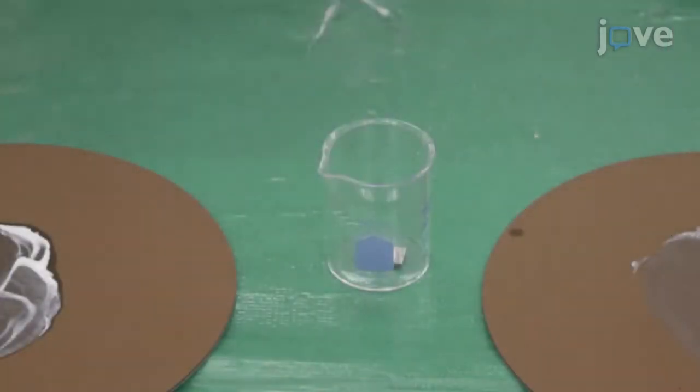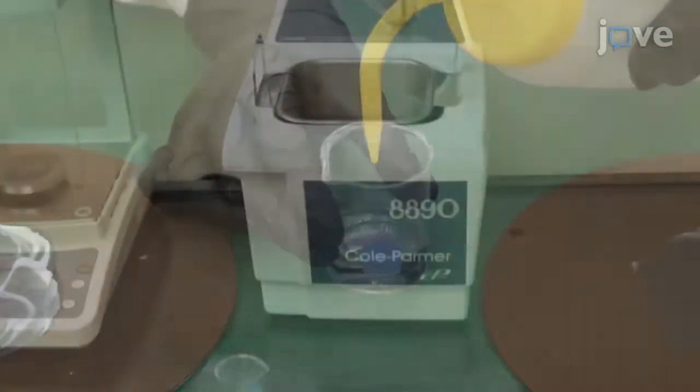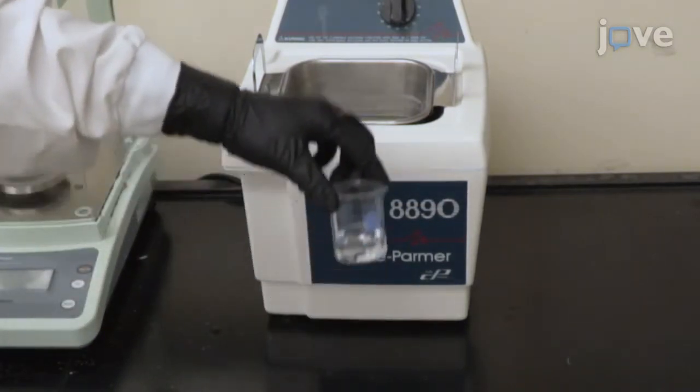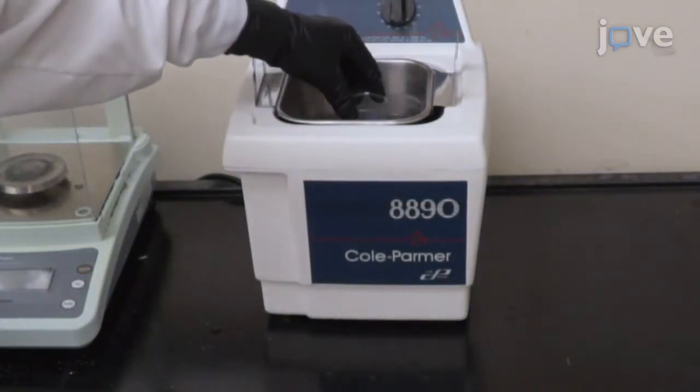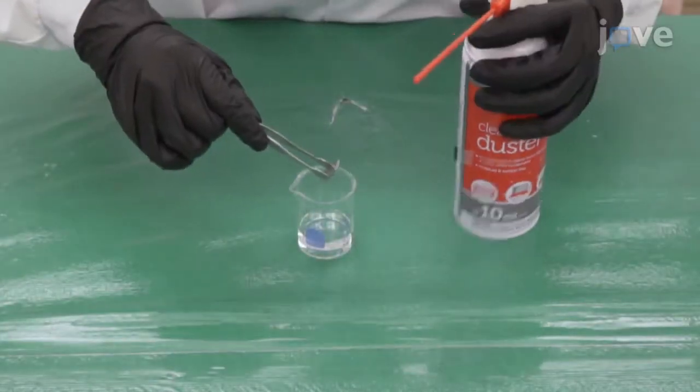Place the polished specimen in a beaker with 40 milliliters of deionized water and transfer the beaker to an ultrasonic cleaner for one to two minutes to remove any surface particles. Then use compressed gas to completely dry the surface.